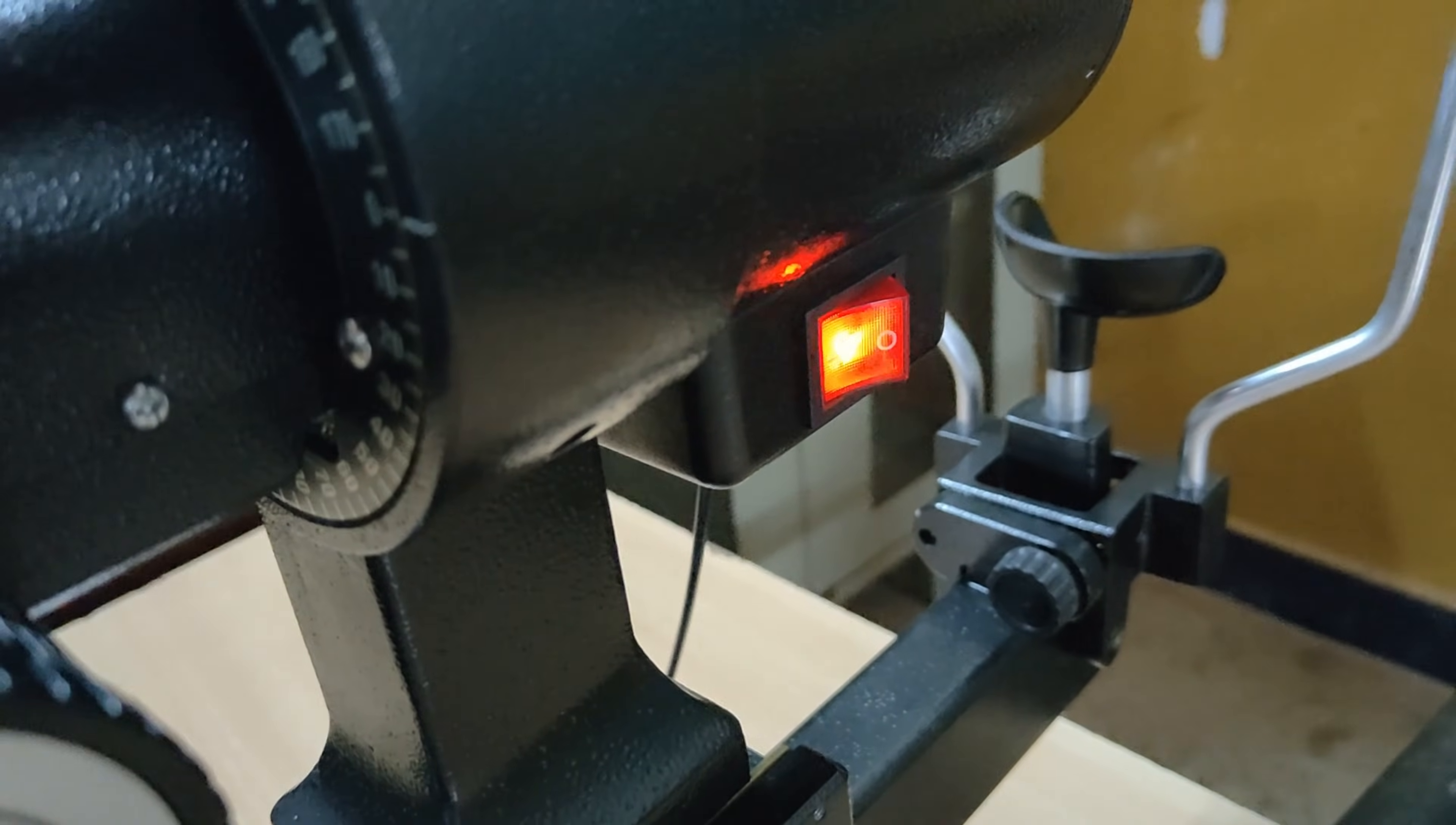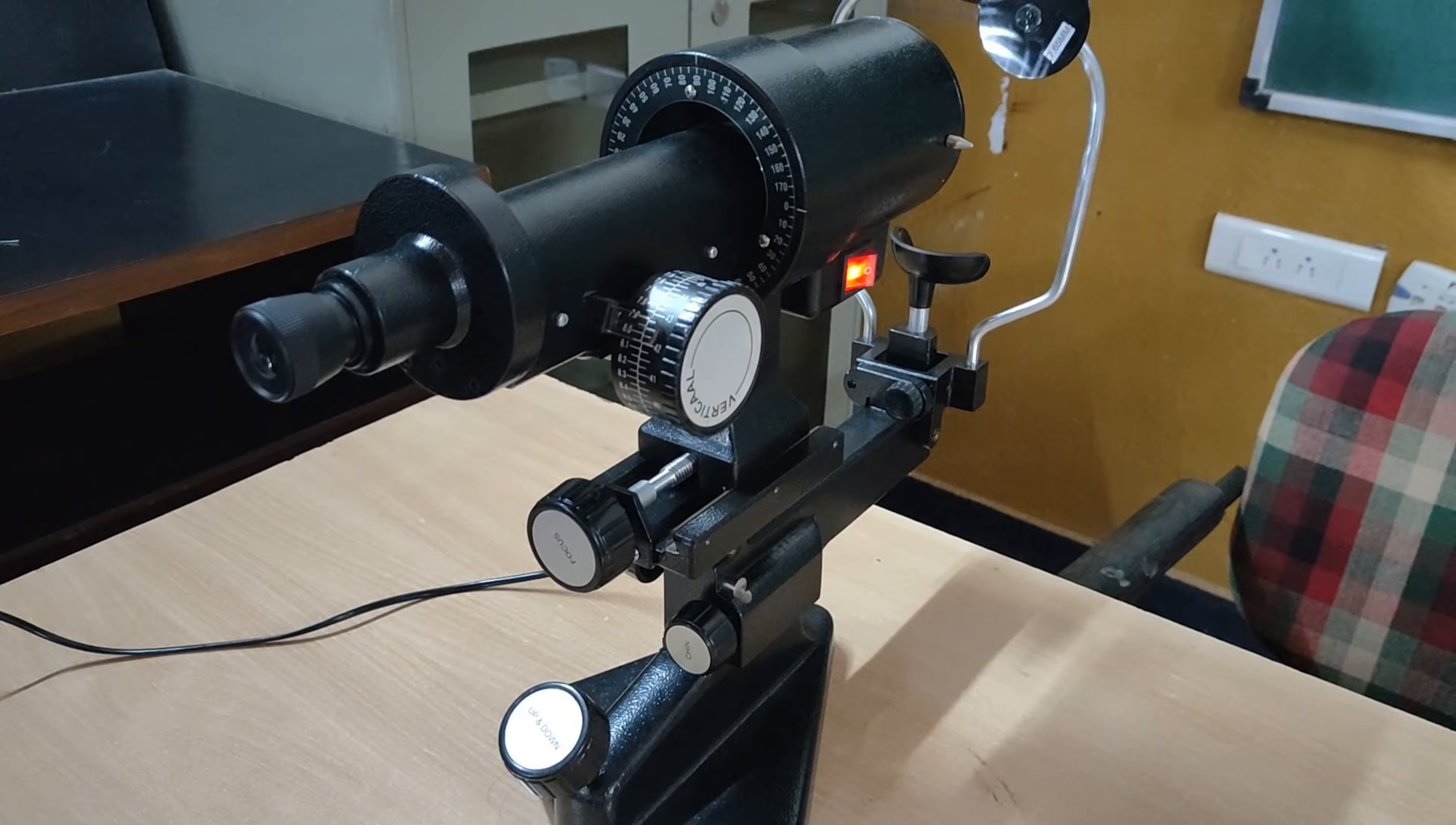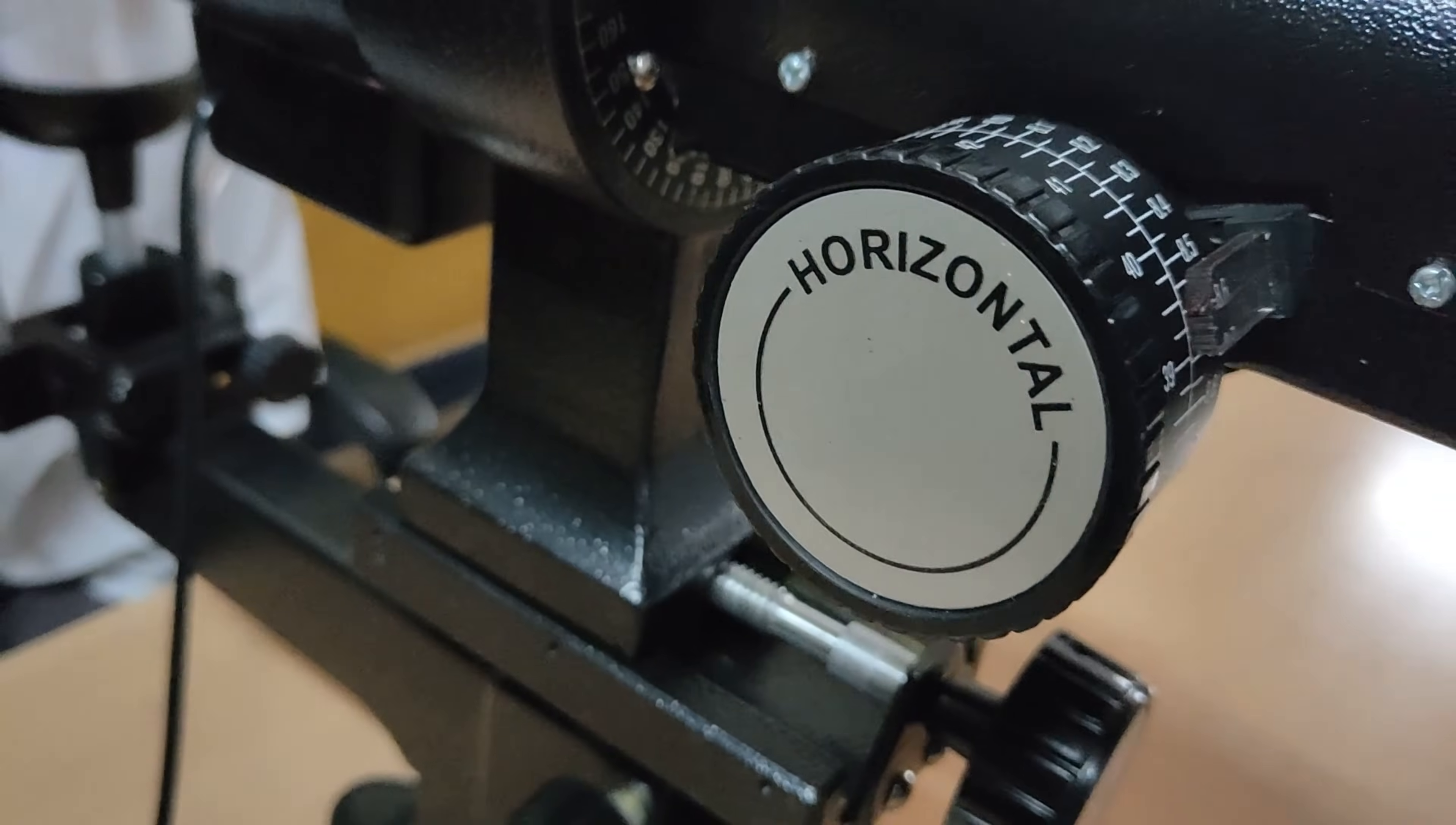Hello everyone, welcome to my channel. In this video, we will be learning about keratometer. Keratometer is a device that measures the curvature of the anterior surface of cornea and is also used to determine the refractive power of the cornea.